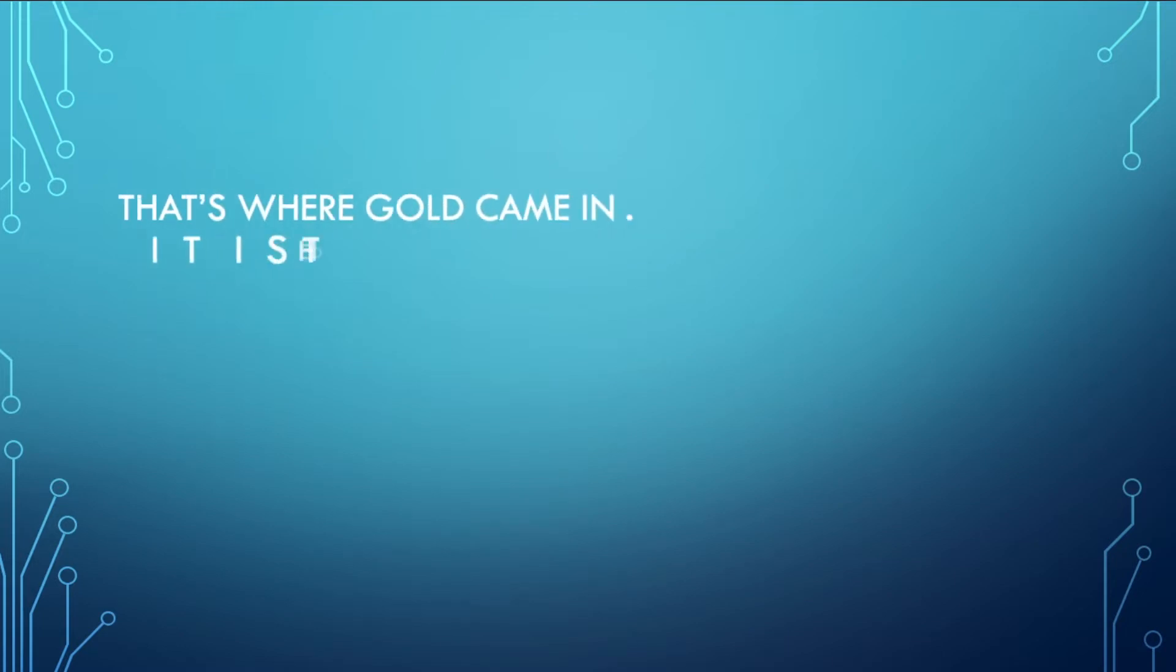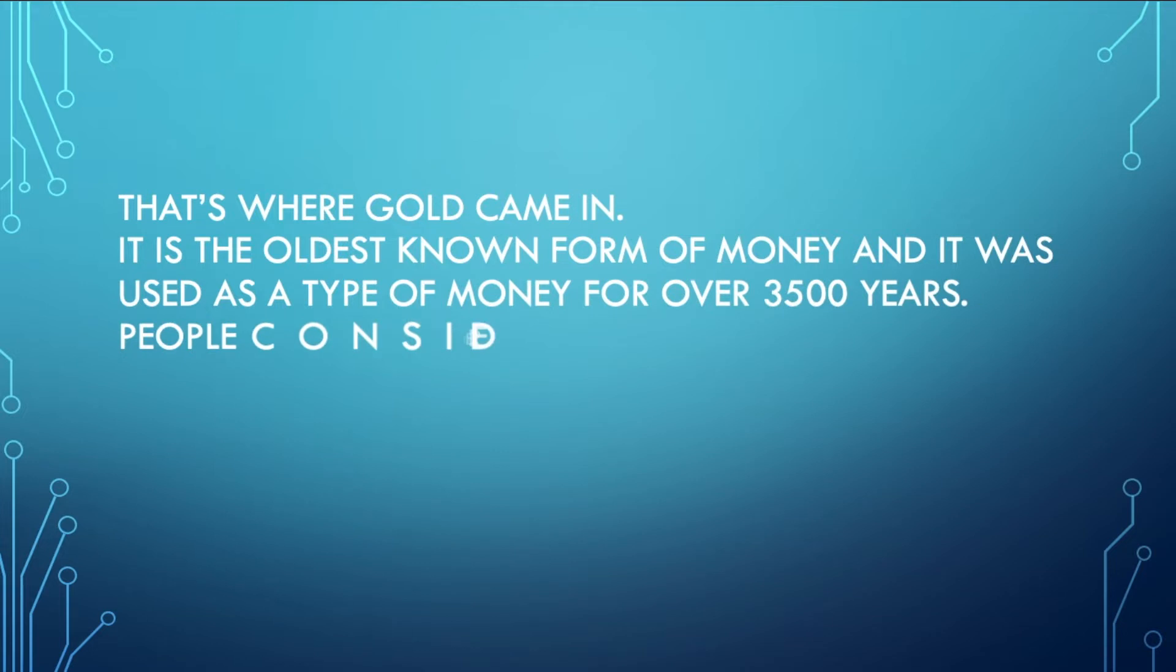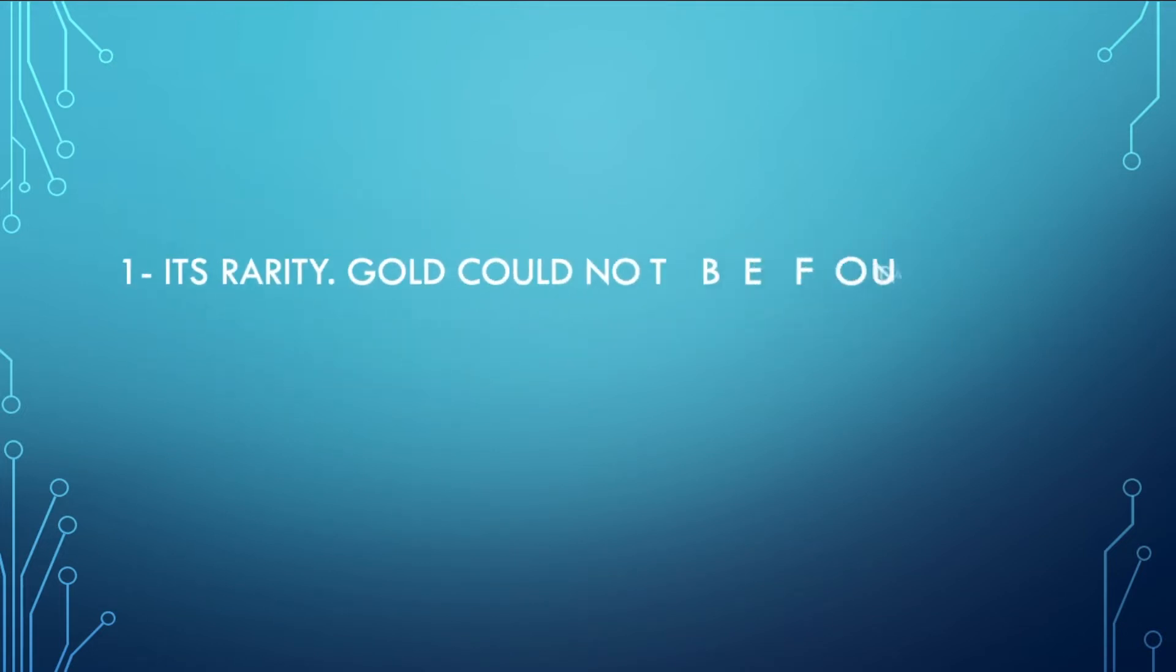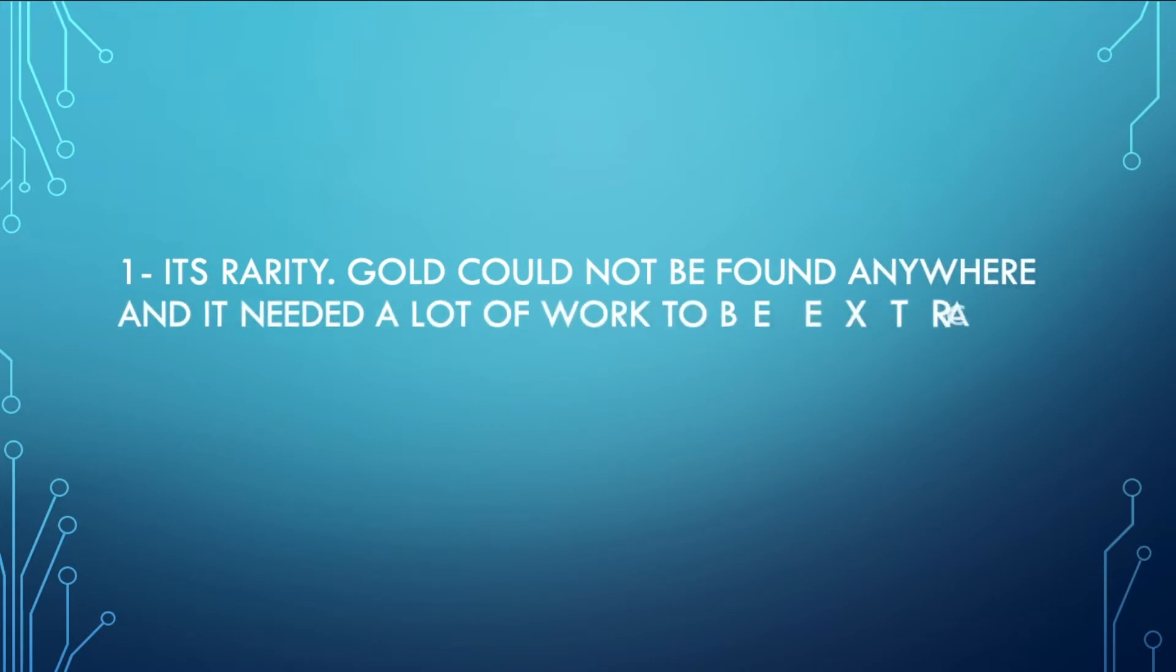That's where gold came in. It is the oldest known form of money. People considered it a great currency thanks to three criterias it had. One, its rarity. Gold could not be found anywhere and it was hard to harvest, which made gold have a good store of value.